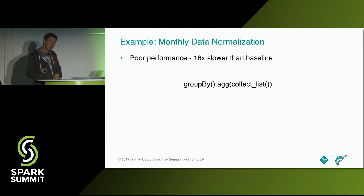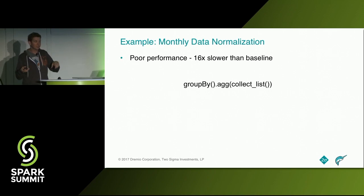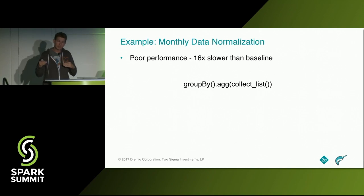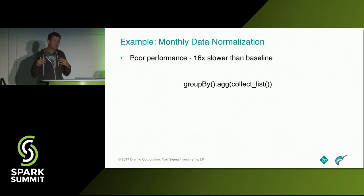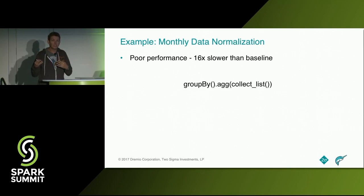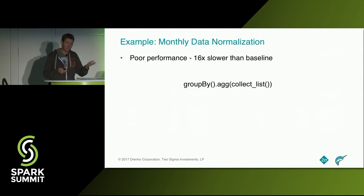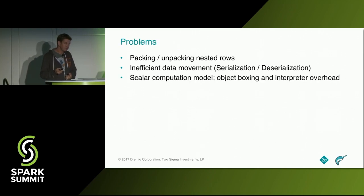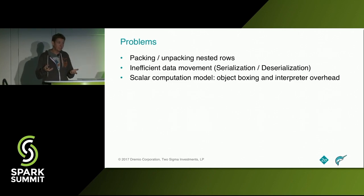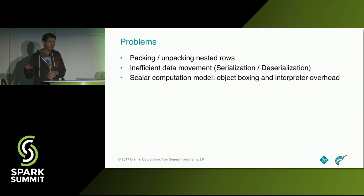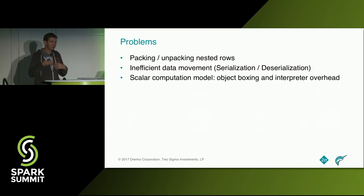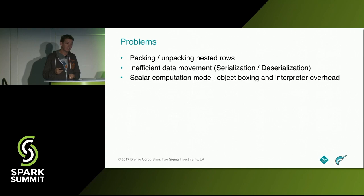This approach has poor performance. Comparing it to a baseline — the group by aggregate collect list, which is the Scala baseline in Spark to materialize those lists — evaluating the normalization on top should be a small cost, but we pay 60 times the cost because there's a lot of serialization and deserialization happening. The problem is there's a lot of packing and unpacking of nested rows, inefficient data movement, and the scalar computation model overhead of boxing and the interpreter.